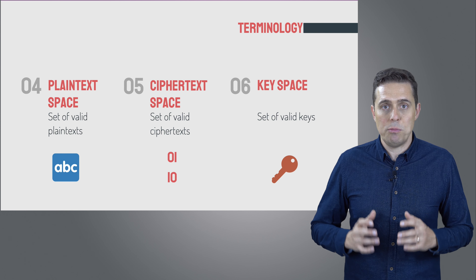Encryption — this is where the magic happens. The encryption function accepts an element of the plaintext space and an element of the key space, and it produces an element of the ciphertext space. Finally, we have decryption. This is the function that's going to undo what the encryption function did — it accepts an element of the ciphertext space and an element of the key space, and gives you an element of the plaintext space.